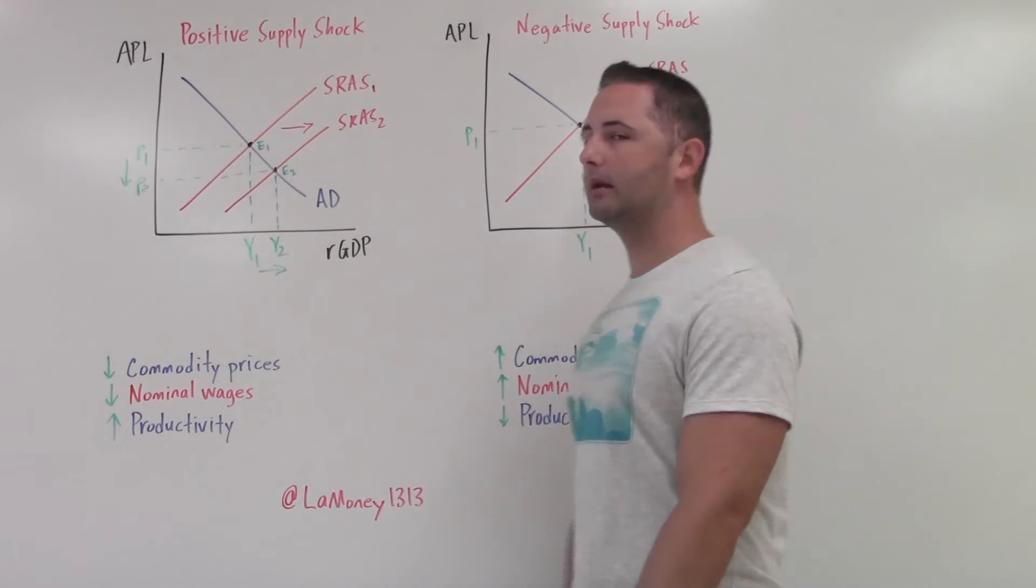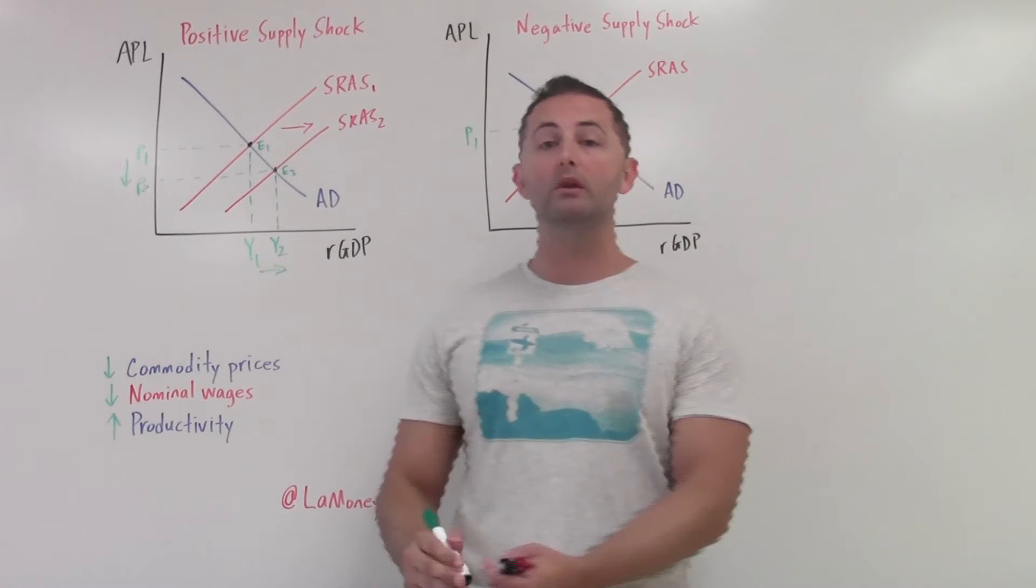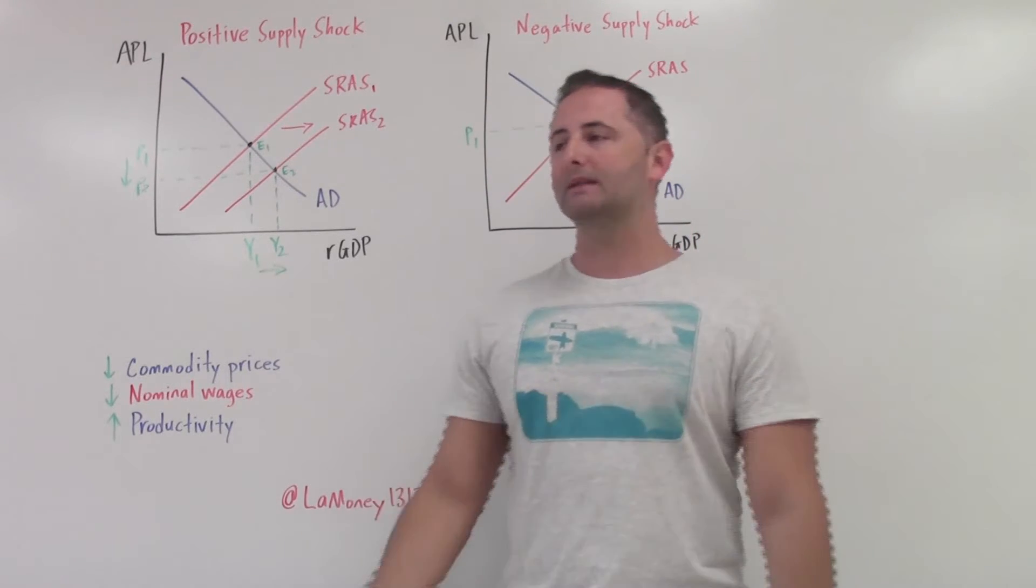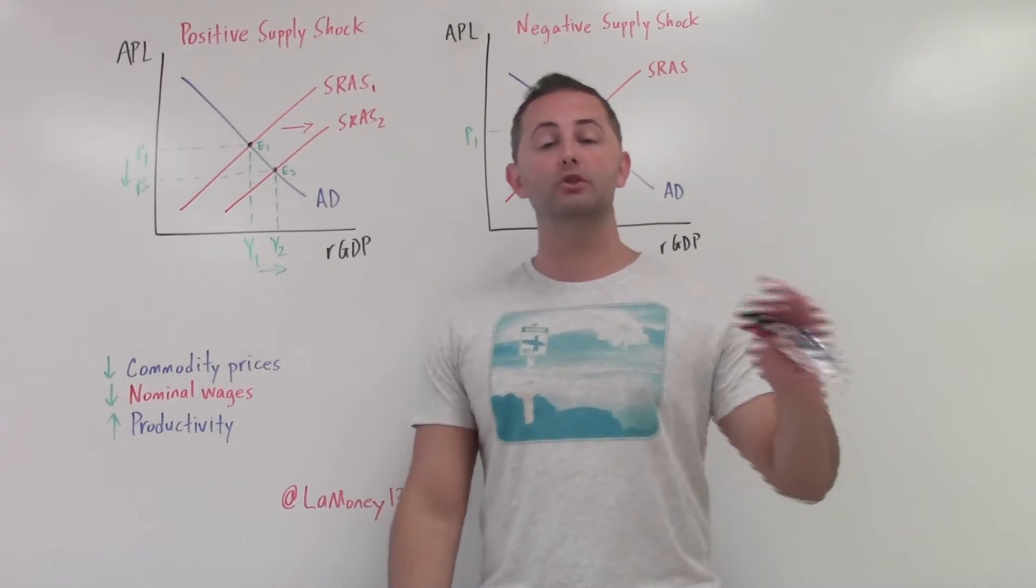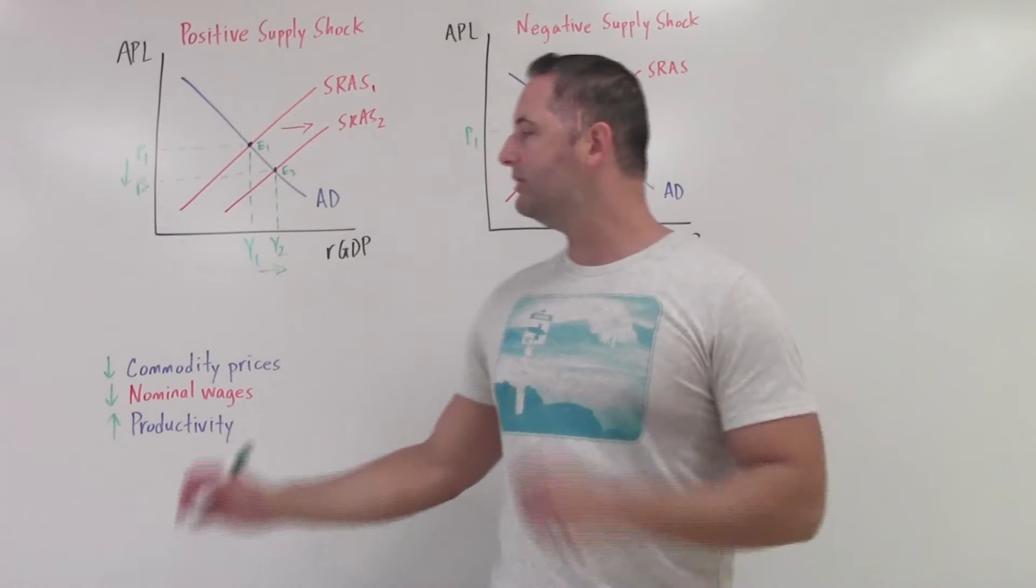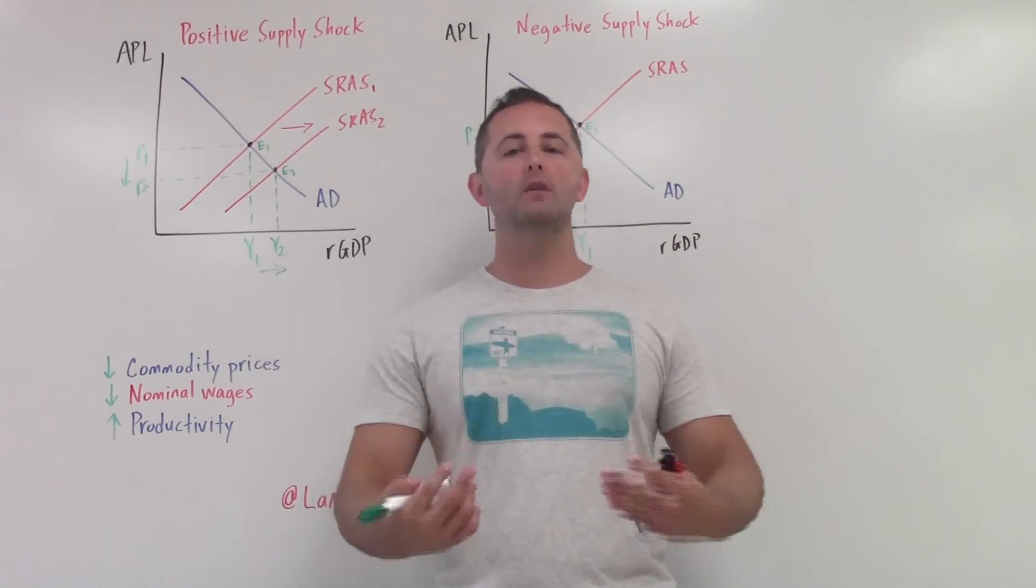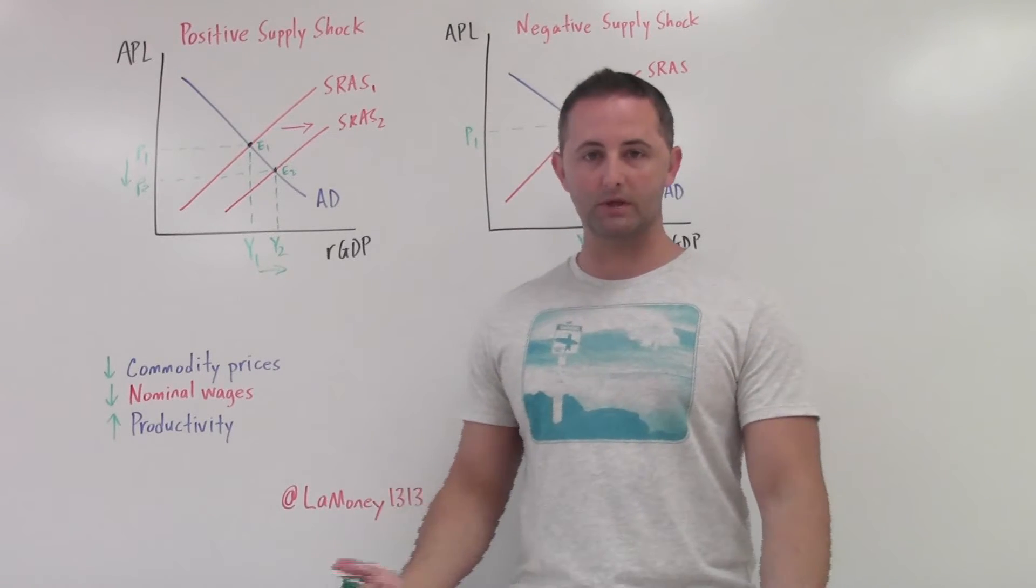A decrease in commodity prices. And what we're talking about, remember, because this is aggregate supply, so it's not for one company. So it could not be something like we have cheaper cotton, so that's going to make cotton t-shirts cheaper. That's true. That's on supply demand model. This is talking about aggregate supply, aggregate demand. So it has to be a commodity with economy-wide significance. So we're really talking about oil and gas for the most part, something like that.